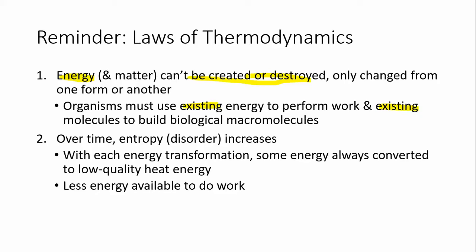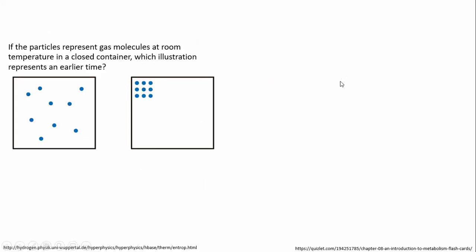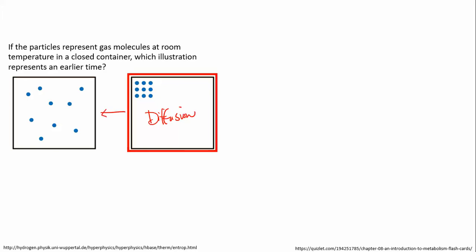That low quality energy is not going to help us build a molecule, to move, or to meow at our humans while they're recording a lecture video. Looking at entropy: if you have molecules in two different organizations, the earlier time would be the more ordered system. Disorder tends to increase, which is why diffusion tends to happen. You have molecules trapped in one corner, you release the system, and those molecules will diffuse and spread out.